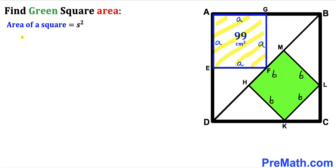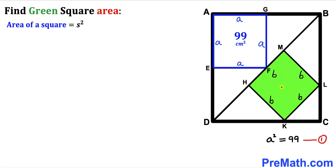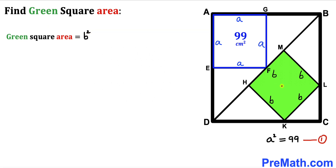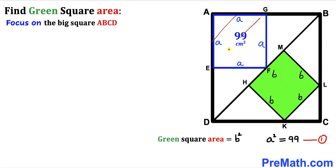So therefore we can write a² = 99, and I'll label this as equation number 1. Now focusing on the green shaded square HKLM with side length b, its area is b². Since we want to find the area of the green square, we must find the value of b². Let's now focus on the big square ABCD.